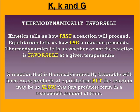Thermodynamically favorable tells us that the reaction should proceed — but what if we don't get any products? Kinetics tells us how fast a reaction will proceed, equilibrium tells us how far a reaction proceeds, and thermodynamics tells us whether a reaction is favorable at a given temperature. Just because a reaction is favorable, it may form products at equilibrium, but maybe it's doing so slowly that only a few products form in a reasonable amount of time — we say those reactions are under kinetic control.